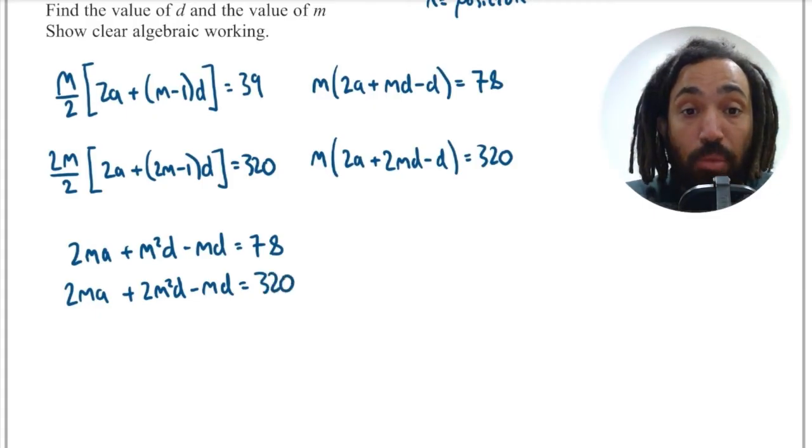Now I'm hoping you can see how we're going to solve these equations because they are very similar. If we subtract one from the other then it should give us an expression for just M squared D because the 2MAs will cancel and the minus MDs will cancel.